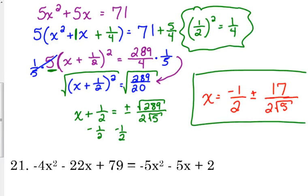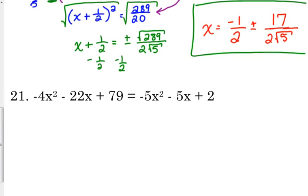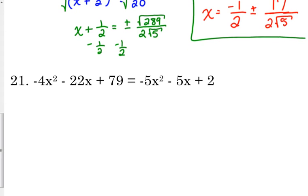Alright. Let's do one more. And then I want you all to practice with this a little bit. Number 21. We've got a whole bunch of things on both sides. Typically, with completing the square, I always want to move my variables to the left side. And in this case, that is good for us because if we add the 5x squared to both sides, that's going to give us a positive x squared. So, that's going to make completing the square a little bit easier. So, I'm also going to add the 5x and move the 79 to the other side. So, that is negative 77.